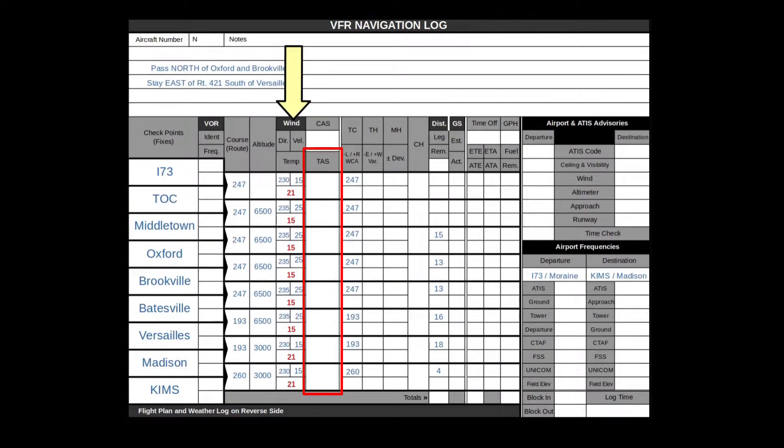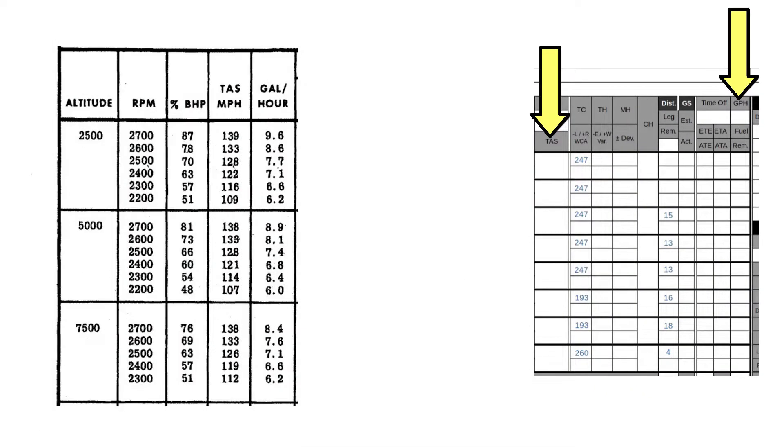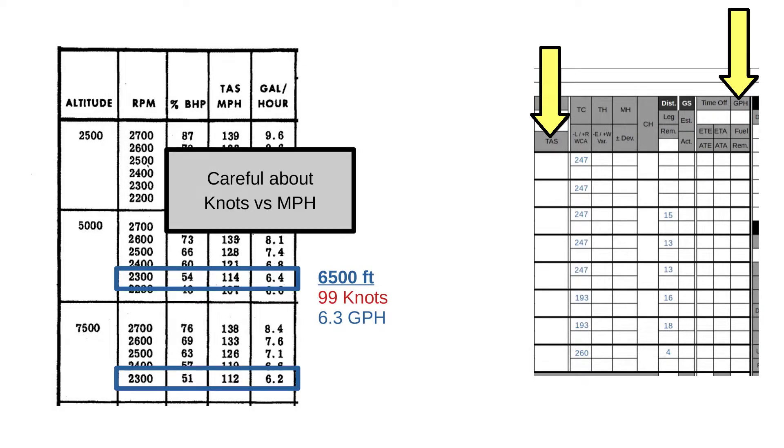The next thing we'll need is our true airspeed and fuel burn in gallons per hour. We get that from our performance charts. Since there's no row for 6,500, we'll do a rough interpolation between 5,000 and 7,500.